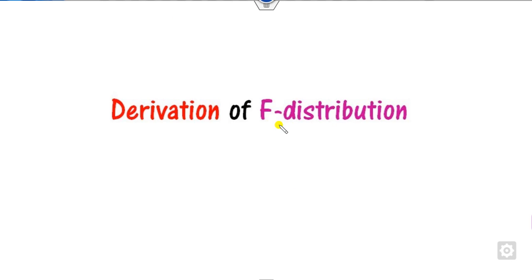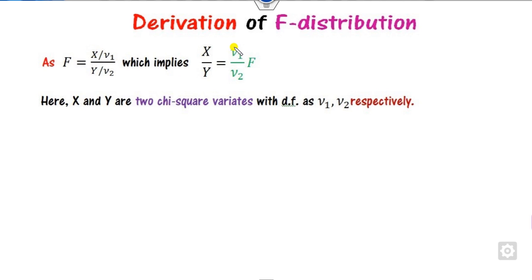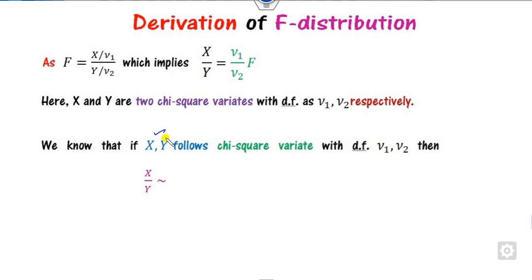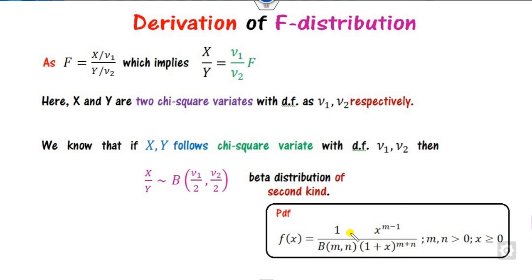Now we can derive the F distribution and find its PDF. By definition, F is the ratio of x over y divided by their respective degrees of freedom, where x and y are two independent chi-square variates. The ratio of two chi-square variates follows the beta distribution of the second kind, while x divided by x plus y follows the beta distribution of the first kind. The ratio follows beta of second kind with parameters mu 1 over 2 and mu 2 over 2.